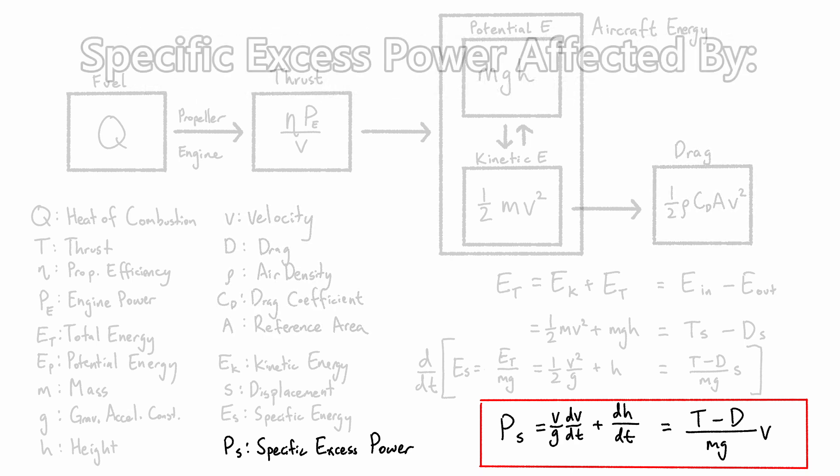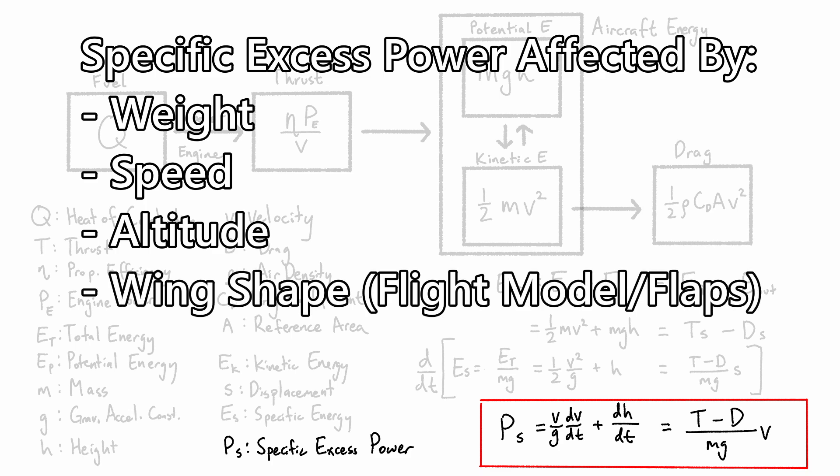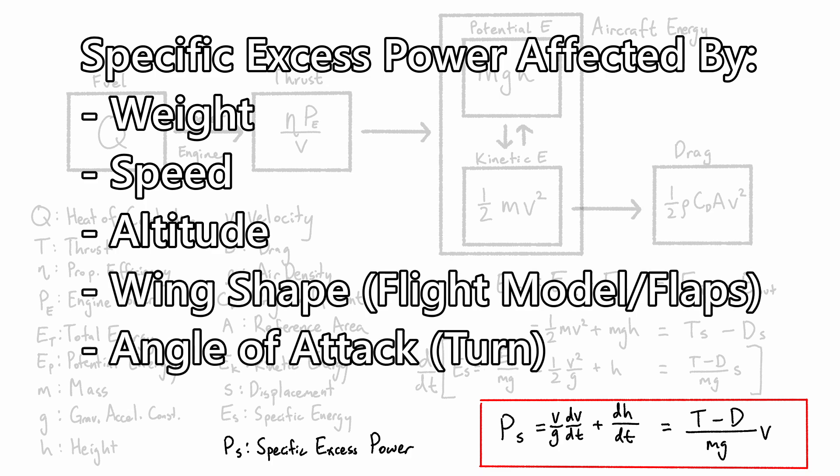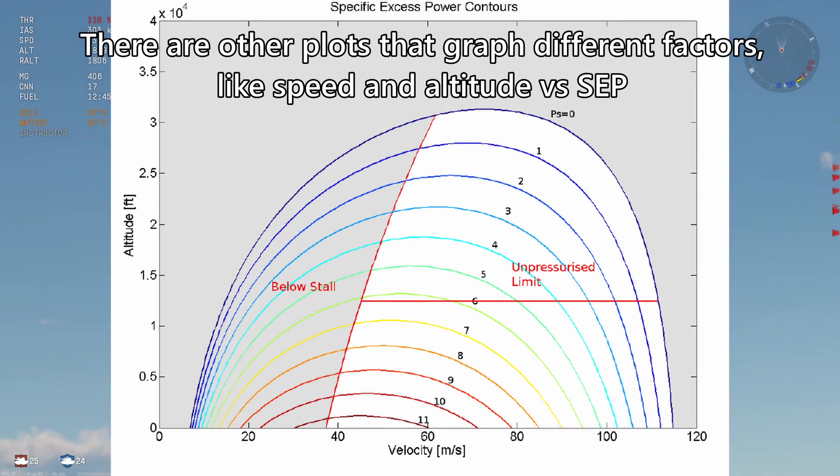All in all, we can see that specific excess power is affected by weight, speed, altitude, wing shape, and angle of attack. As much as it would be nice to be able to plot all of these factors that affect specific excess power and get a full idea of how it changes with every single one of these variables, our graphs are limited to two dimensions, so at least on our energy maneuverability diagram, we're plotting speed and turn against specific excess power.